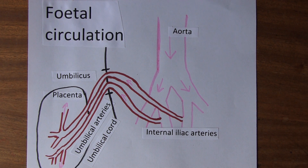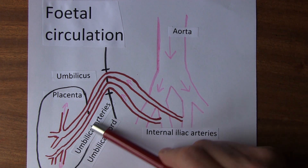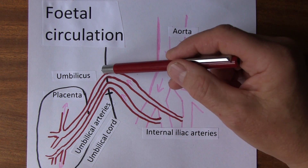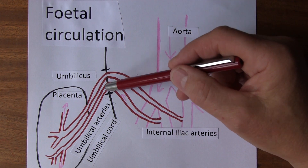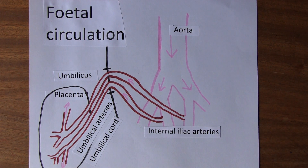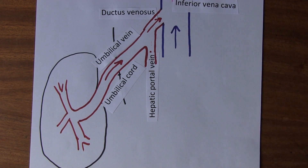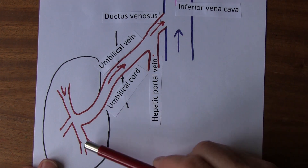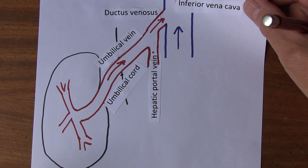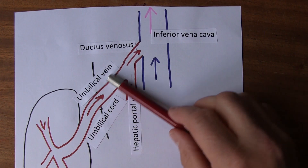The blood then has to come back from the placenta, also in the umbilical cord. The umbilical arteries run within the umbilical cord — that's the umbilicus, the baby's belly button, from there to there. The umbilical cord carries the arteries, but it also carries the umbilical vein. The umbilical vein is shown in bright red because it's carrying highly oxygenated blood, and it runs back through the umbilical cord into the baby.